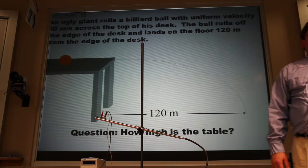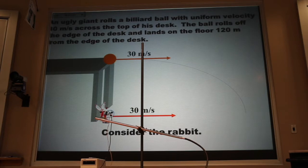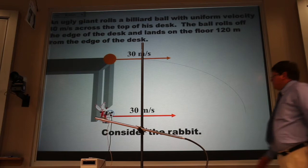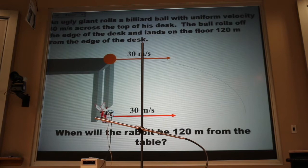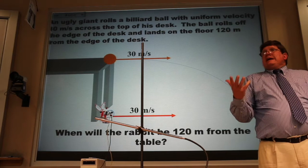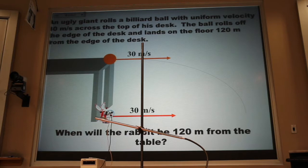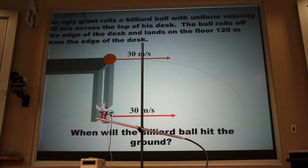We take the velocity of that ball and let that be the velocity of our Energizer Bunny, because just like the Energizer Bunny, the x part of the velocity doesn't change speed. How long will it take that bunny to get 120 meters from the edge of the desk? Four seconds. If every second the bunny goes 30 meters, it takes four seconds to get to the 120 mark. The ball lands right on that bunny rabbit, so the billiard ball is in the air for four seconds.